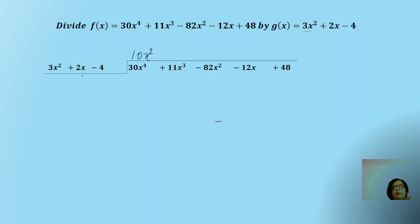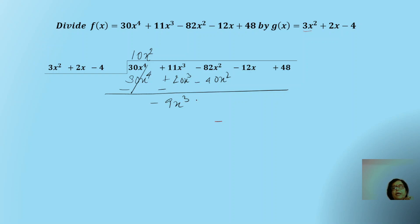Now 10x² multiplies all terms of the divisor. The first term gives 30x⁴, the second term gives 20x³, and the next term gives minus 40x². Next, we subtract these terms from the dividend. The first term cancels, leaving minus 9x³, and this becomes minus 42x² and minus 12x plus 48. So the next quotient term: since we have minus 9, we get minus 3x, because 3 × 3 = 9 and x² × x = x³, giving minus 9x³.